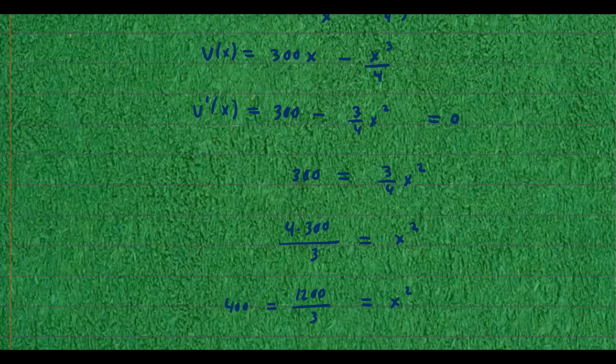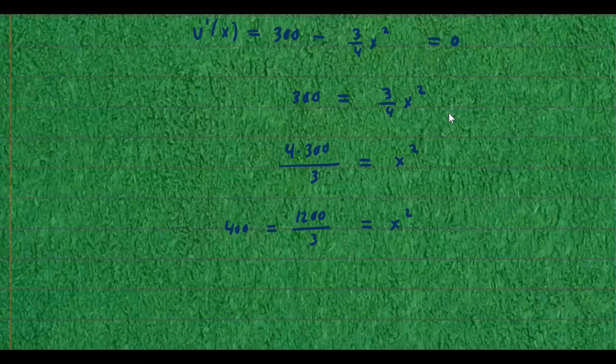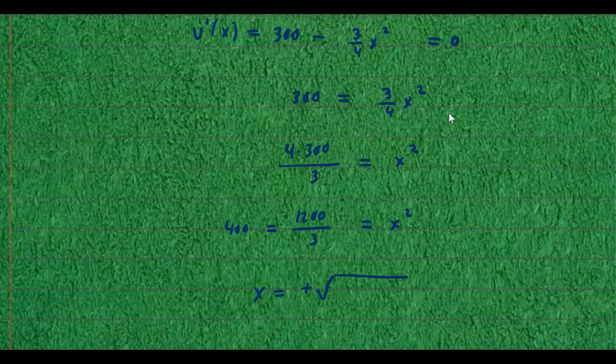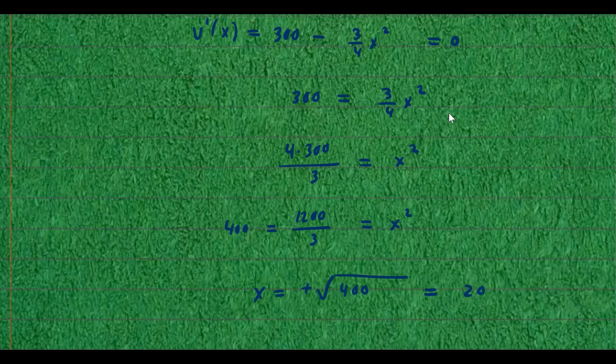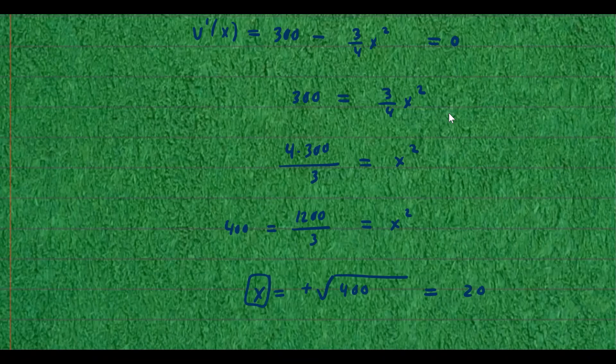So that's 1,200 divided by 3 equals x squared. And we know this is equal to 400. And then to solve for x, finally, we take the square root on both sides. And we only take the positive square root because negative dimension wouldn't make any sense. Square root of 400 is going to be 20. So we know x equals 20.